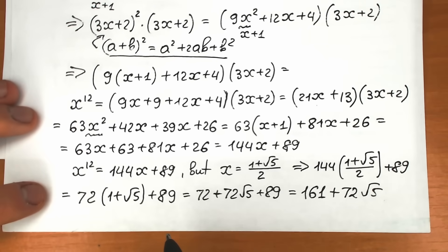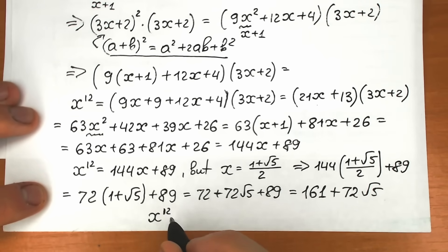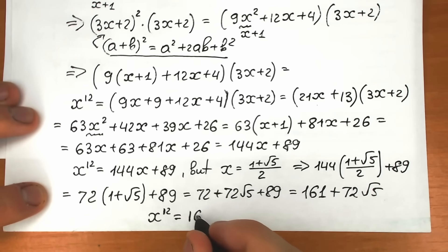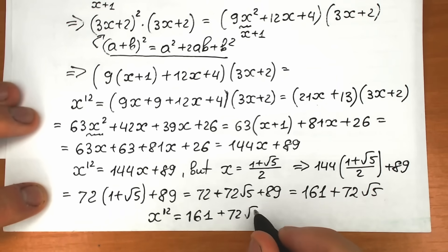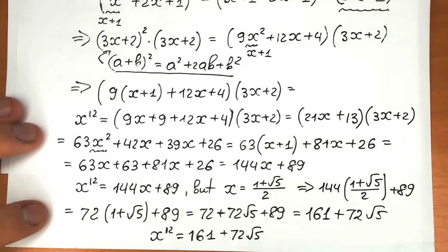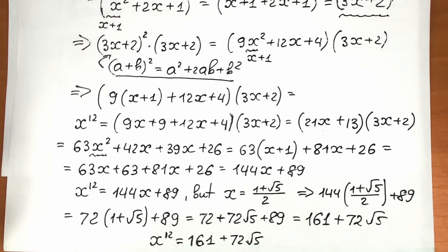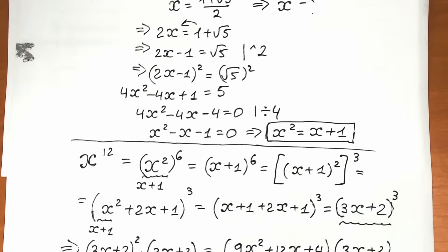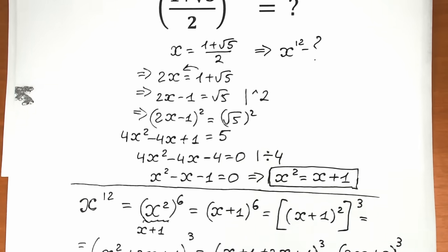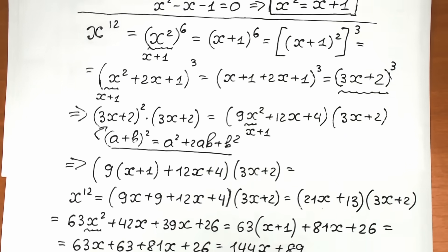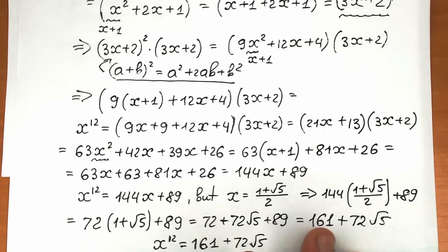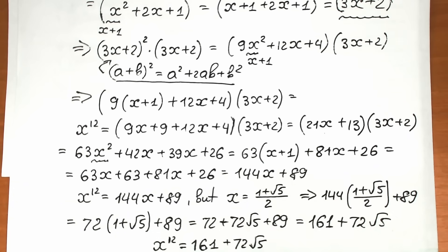So x to the 12th power equals 161 + 72√5. This was a long and complicated challenge, but I hope you understood it and learned something new. Write your questions in the comments — maybe you have a faster approach. Thank you for your time and support, see you in the next video, and have a great day!